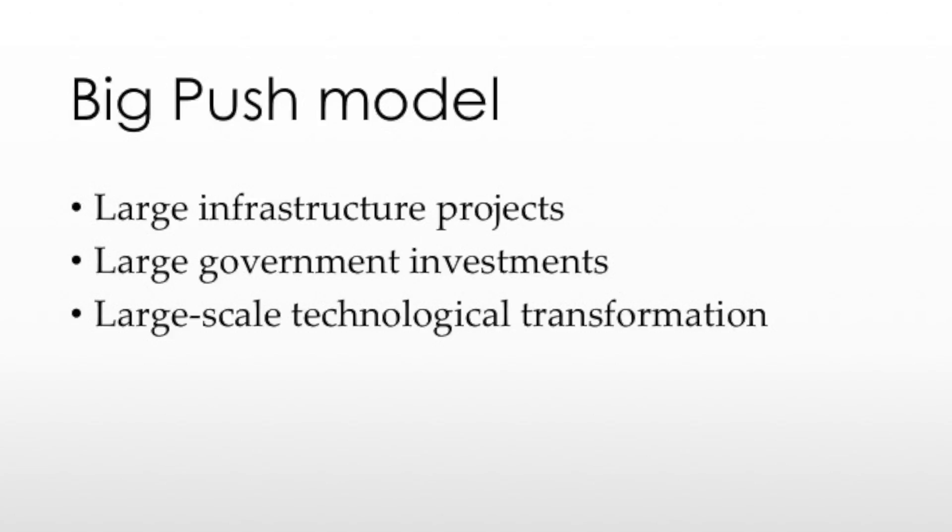Economic development was assumed to happen in stages. First, countries would start producing simpler technologies, gradually substituting locally produced goods for imports. After this learning phase, they would invest in more advanced manufacturing and engage fully with the global market. However, there was an argument made about leapfrogging and a big push to catch up with the industrial West. Dubbed the big push model, the large-scale approach to industrialization was justified as a way for developing nations to catch up quickly. In practice, it meant big infrastructure projects, large government investment, and large-scale technological transformation.